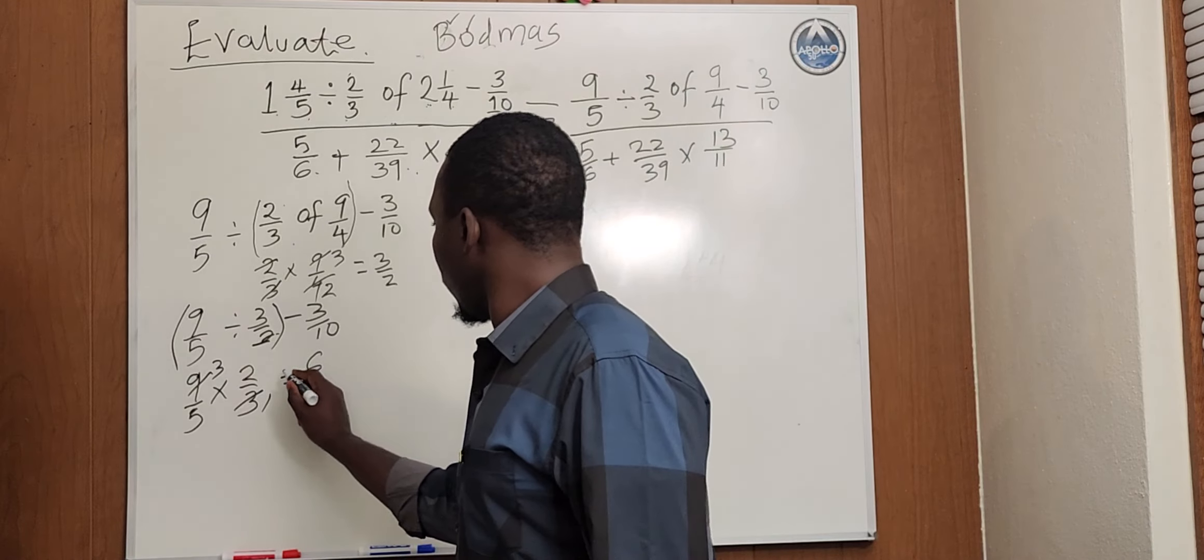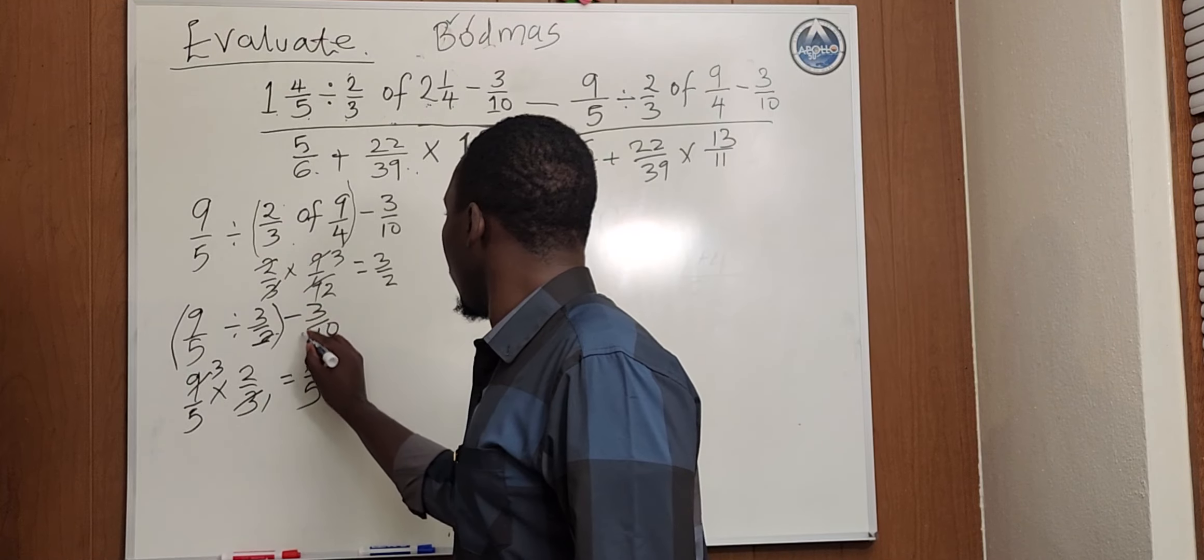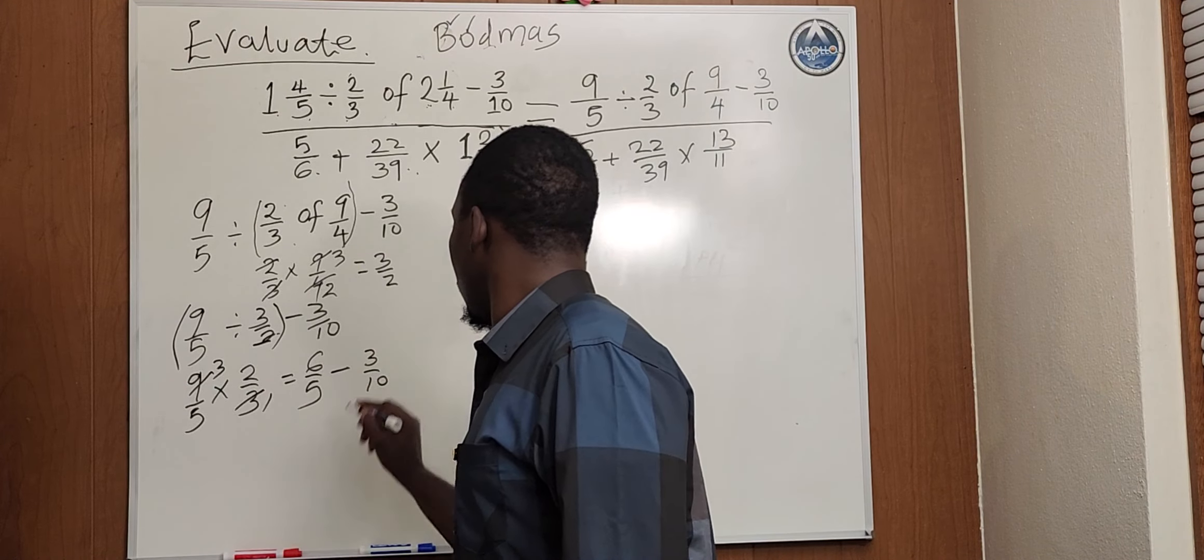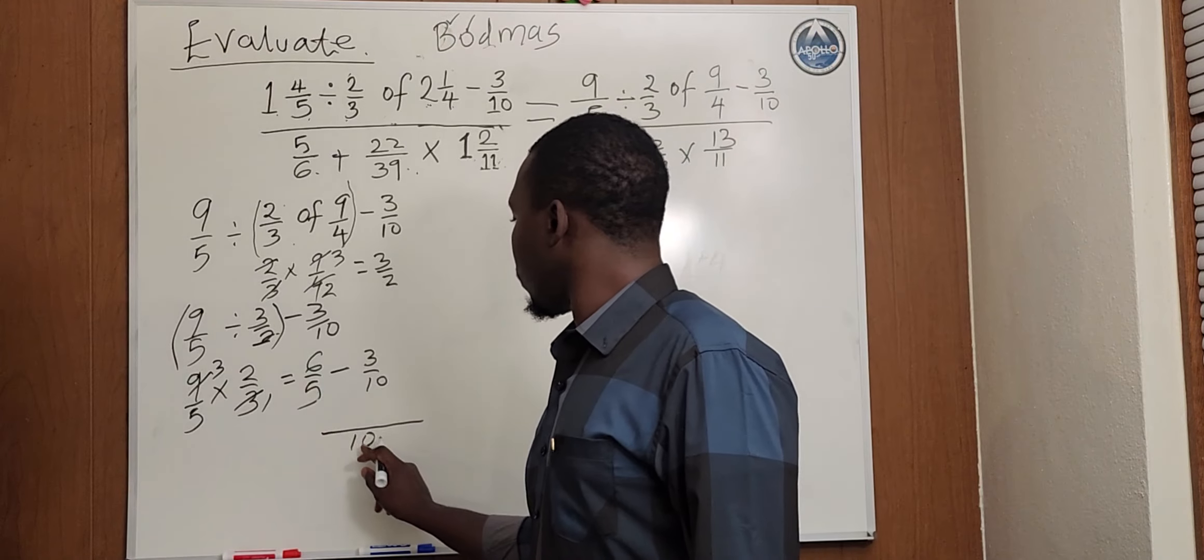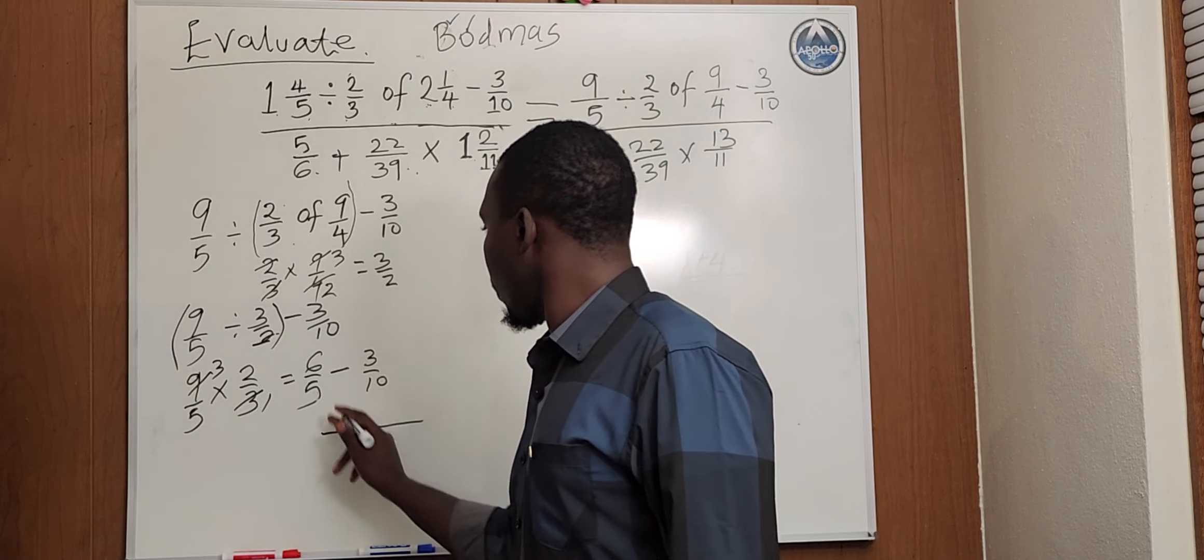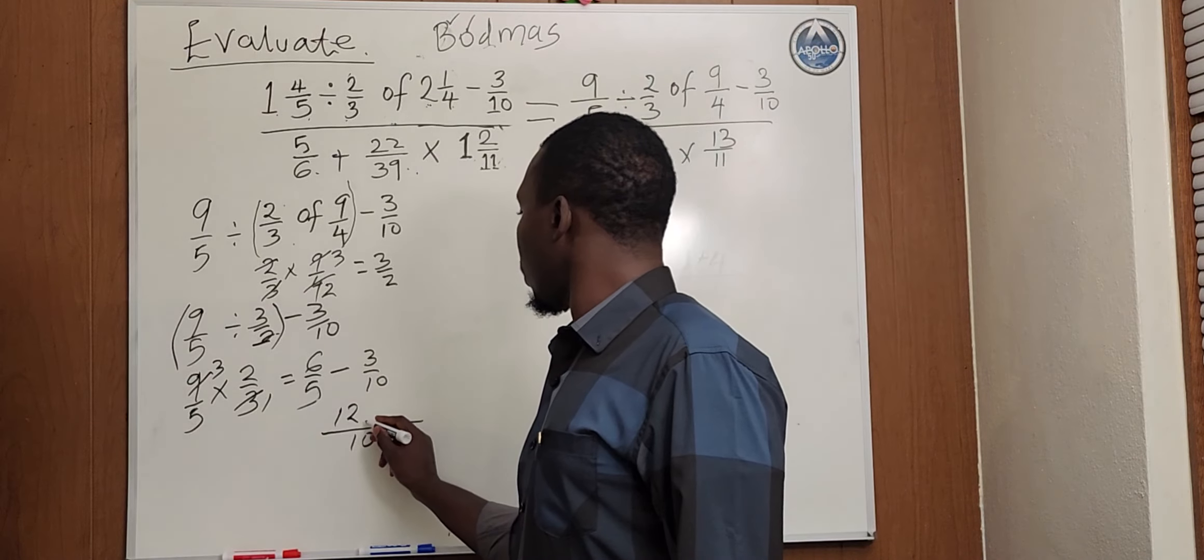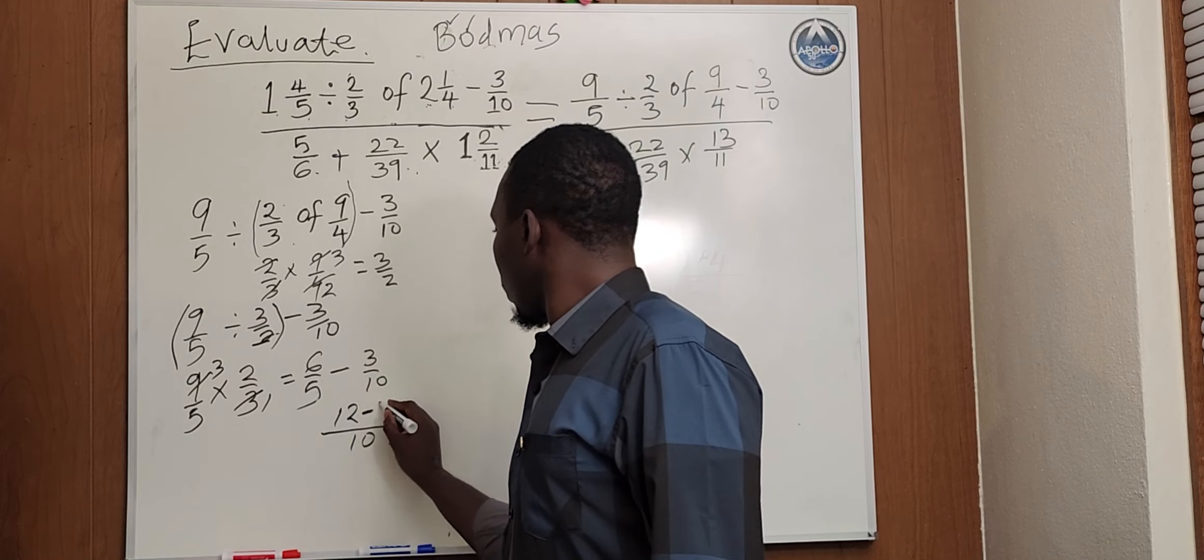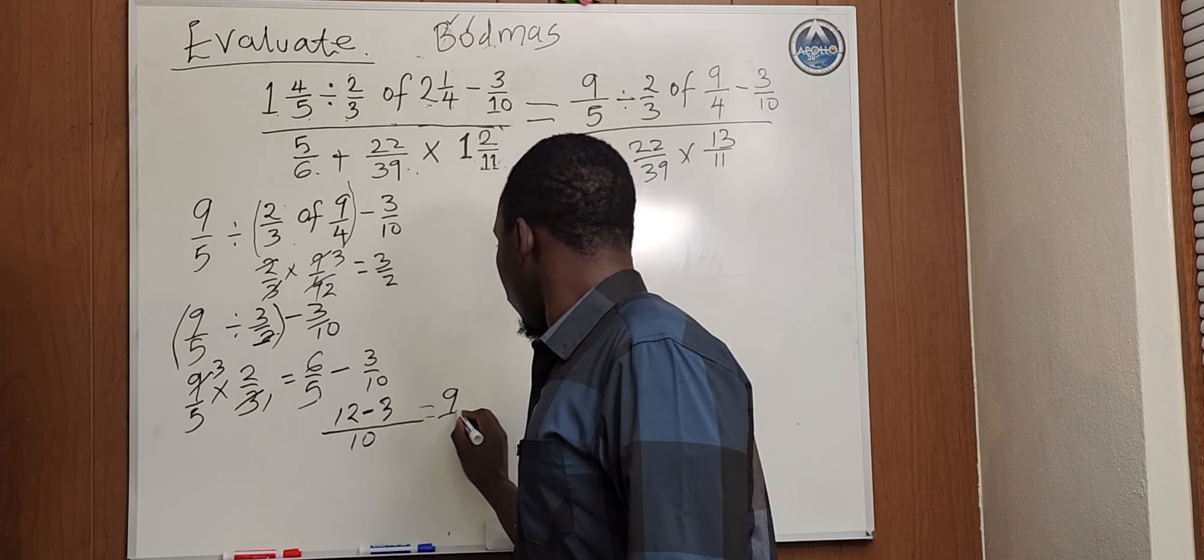The last part for the numerator will be 6 over 5 minus the remaining part, which is 3 over 10. We get the LCM here for 5 and 10 is 10. Then 5 goes to 10, 2 times times 6 will give us 12. 10 goes to 10, 1 times minus 3 here. Then the final answer for the numerator will be 9 over 10.